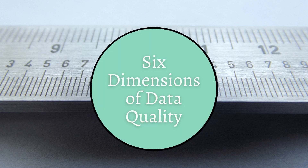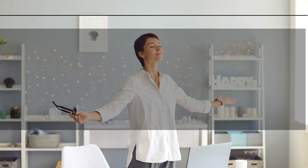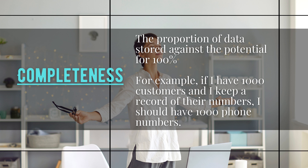Six dimensions of data quality. Completeness: the proportion of data stored against the potential for 100%. For example, if I have 1000 customers and I keep a record of their numbers, I should have 1000 phone numbers.